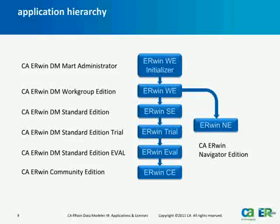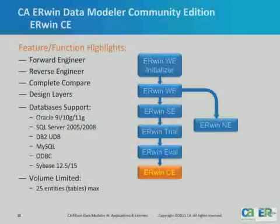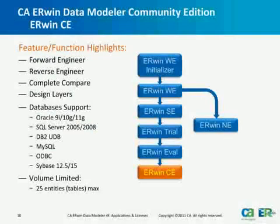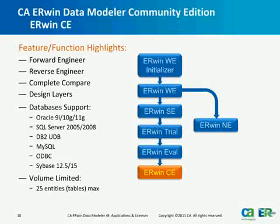We'll begin with this diagram, which shows an overview of the various R8 applications and how each of what were previously separate applications fit together into the single R8 package. Each of these applications has a separate, unique license, and with the exception of Irwin Initializer, each node in this chart is uniquely associated with one license. Having a valid license for any one of these applications will allow Irwin Data Modeler to run as that application. Note also that the applications and their licenses are hierarchical, so as we move up the hierarchy, each step represents an increase in functionality.